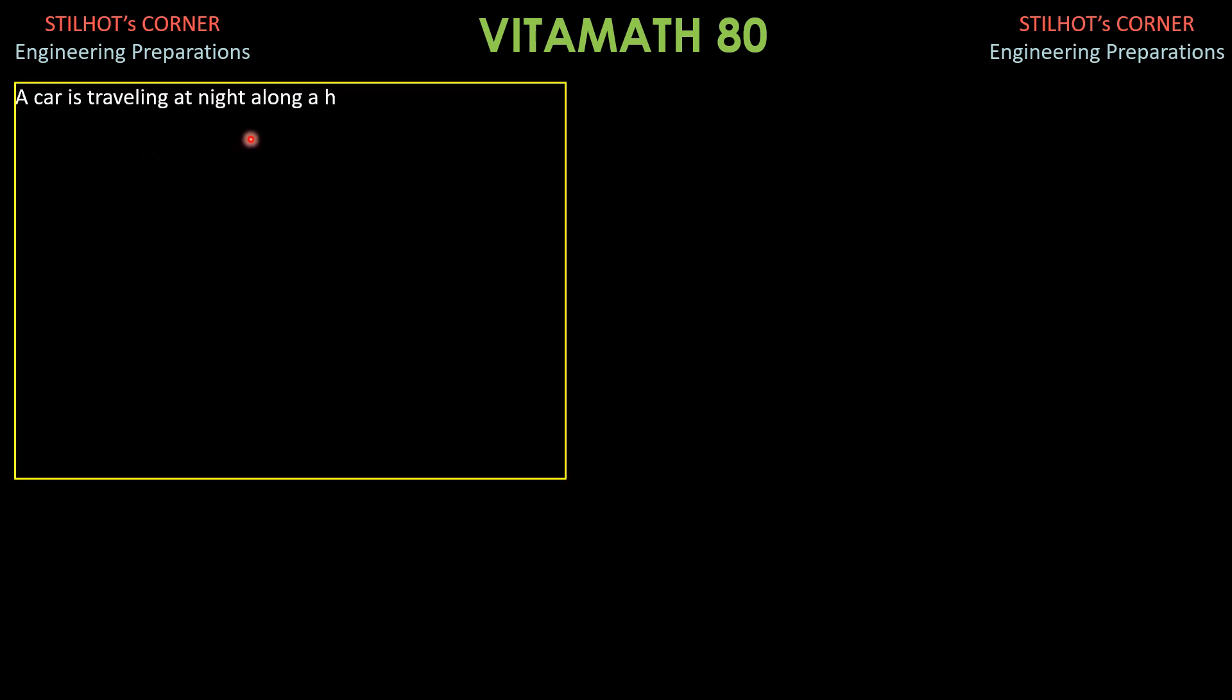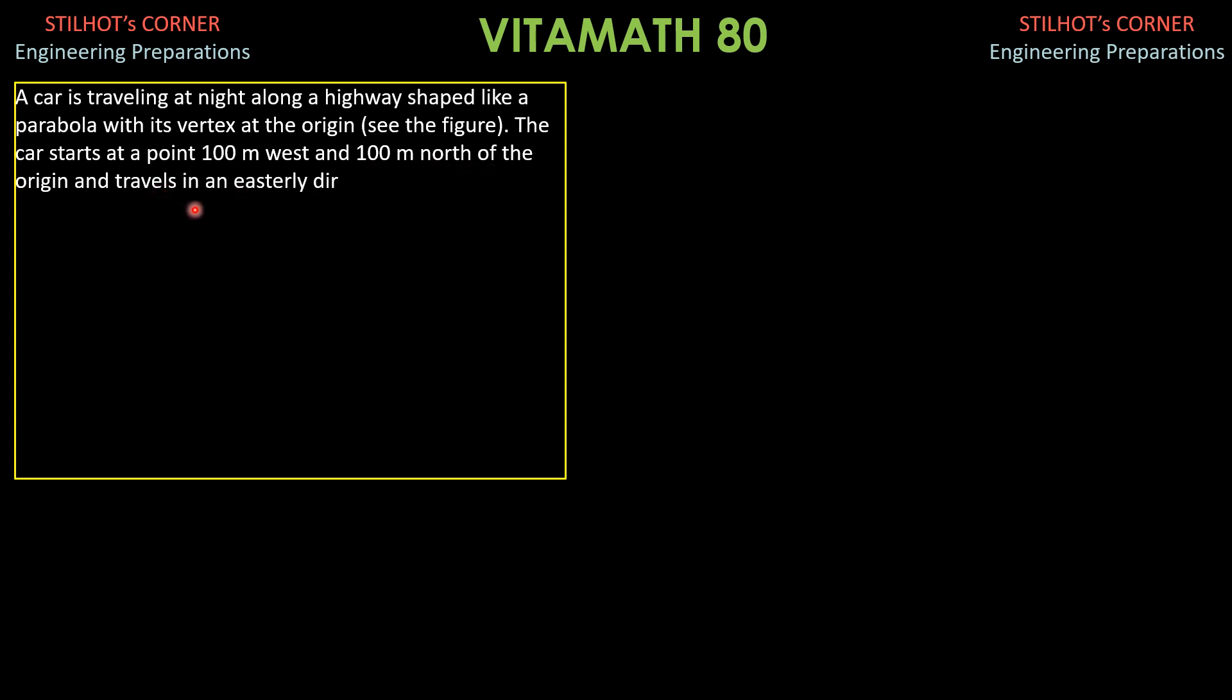A car is traveling at night along a highway shaped like a parabola with its vertex at the origin. The car starts at a point 100 meters west and 100 meters north of the origin and travels in an easterly direction. There is a statue located 100 meters east and 50 meters north of the origin. At what point on the highway will the car's headlights illuminate the statue?